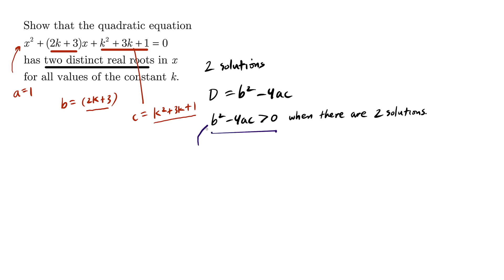So we're going to simply substitute a, b, and c into this inequality. So we have b squared minus 4ac is greater than zero. Our a value happened to be 1, and our c value was this expression here.